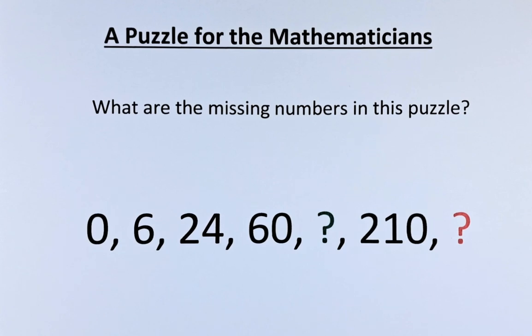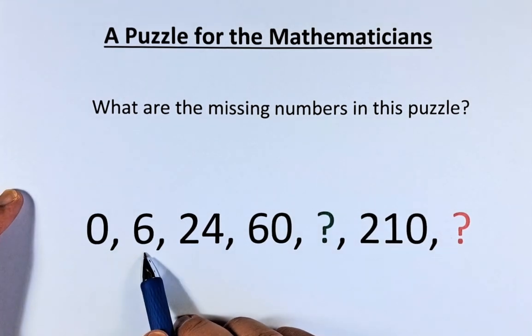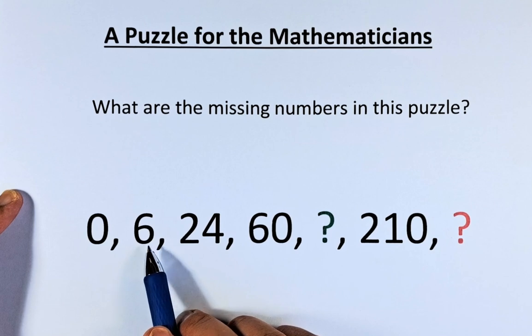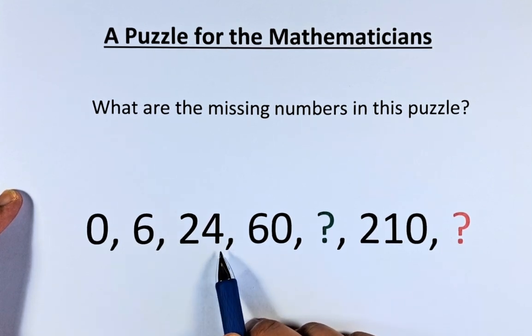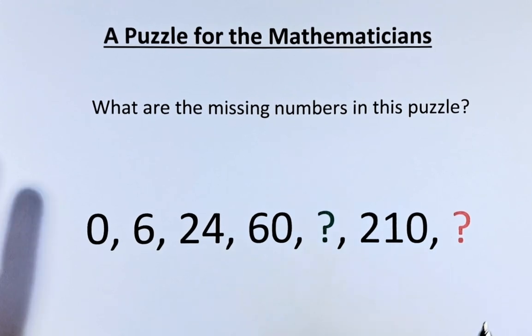Most people what they do is go from here to here. 0 to 6 is 6, 6 to 24 is 18, then 36 and you're going to add them up and find a pattern. But unfortunately that's not the case. In this case you have to use a bit of thinking and we are going to solve this.